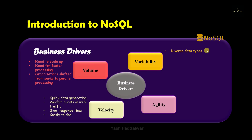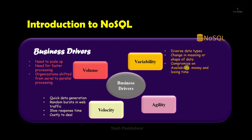The next business driver is variability, which implies variety. Data is not always in a single format — it can be in various dimensions, for example audio in one dimension, video and images in two dimensions, and so on. Adding this diverse data to a predefined schema may change the meaning or shape of the data, and traditional RDBMS was not able to tackle this. It also caused a compromise on availability, money, and time. Hence, variability is an important business driver for NoSQL.